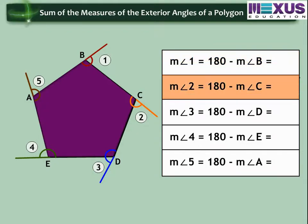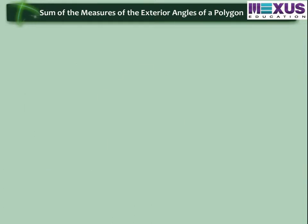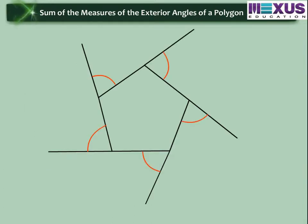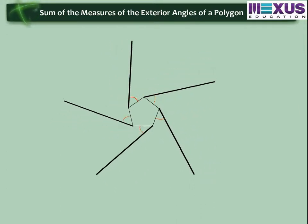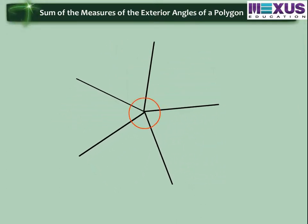Similarly, measure angle 2, 3, 4 and 5 can be calculated. Now, cut the angles one by one and join them to find the sum of all the exterior angles. We see that it makes a complete turn. Therefore, the sum is equal to 360 degrees.